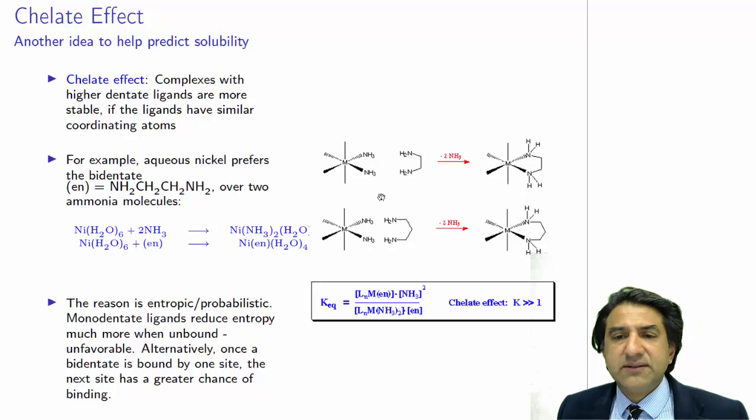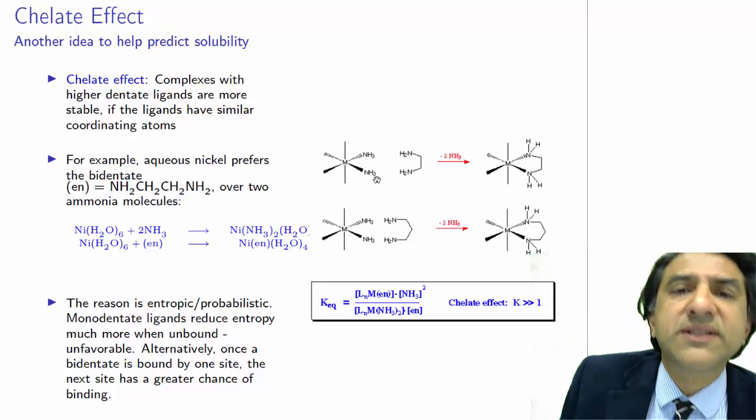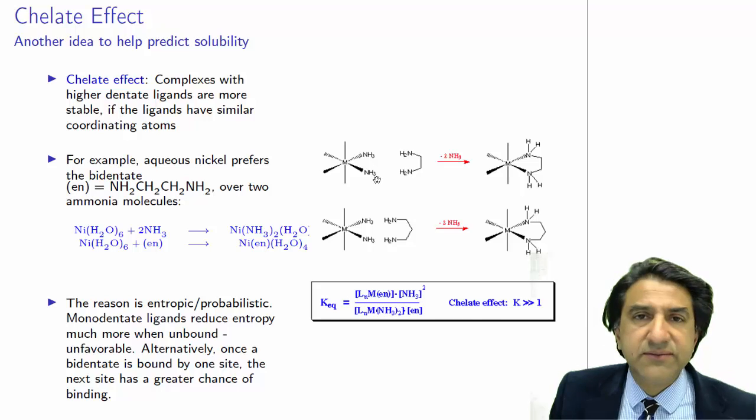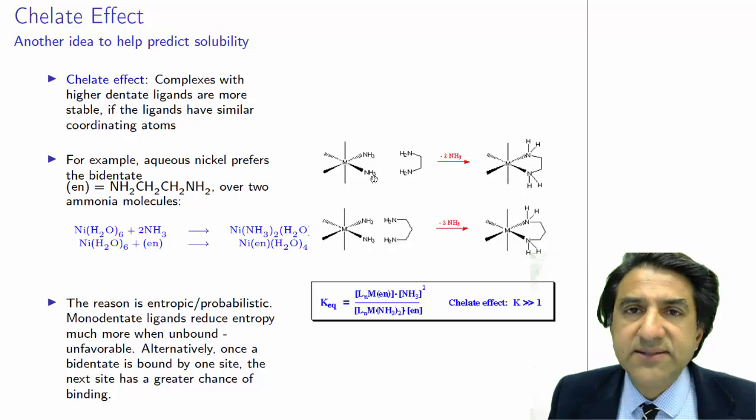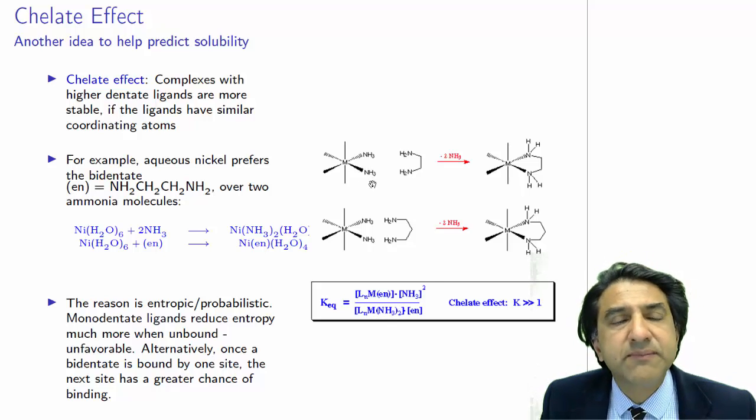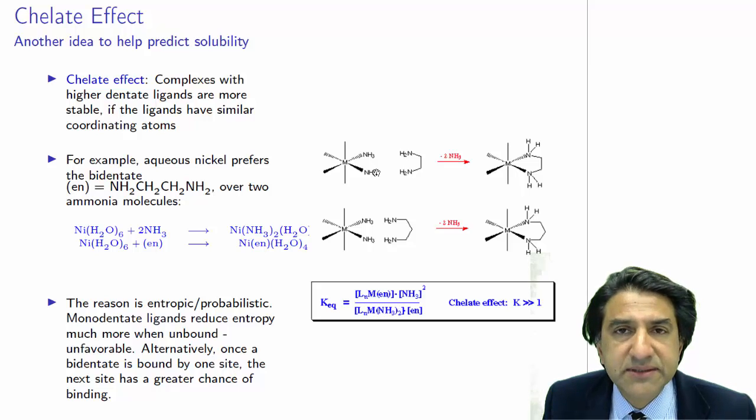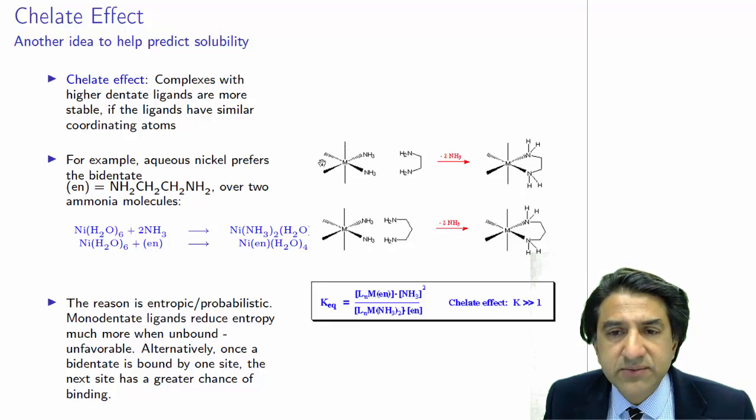Well, essentially, entropy is related to the fact that the system distributes energy over more fragments. Let's think back to the dim, dark years of first-year chemistry. A gas has more entropy than a liquid. A liquid has more entropy than a solid. Why? Because the energy in a gas is more widely distributed. The particles are flowing around in a larger volume compared to a solid. So let's look at what's happening here.